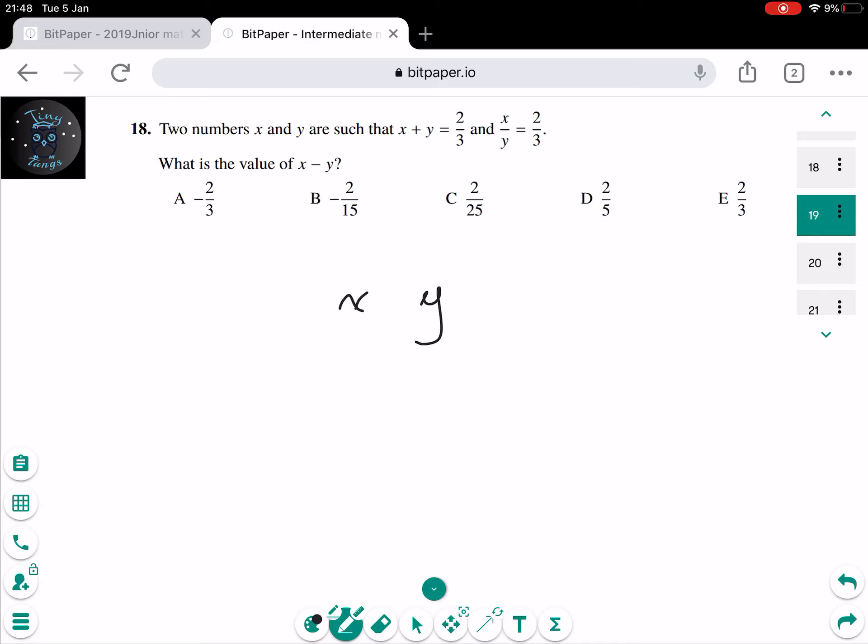And then, if you add these together, you get 2 over 25, which is the answer to question C.